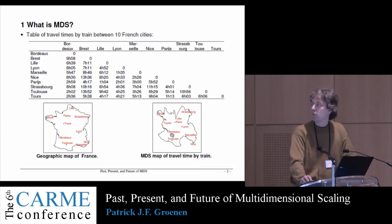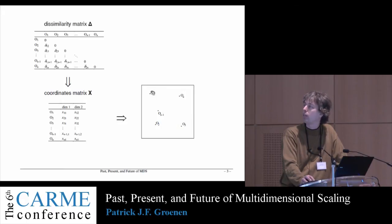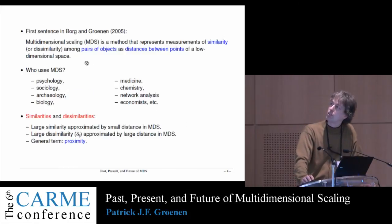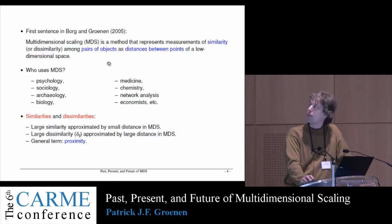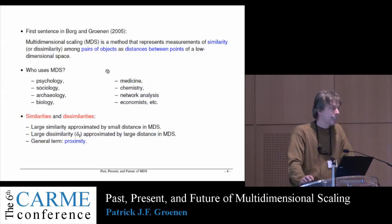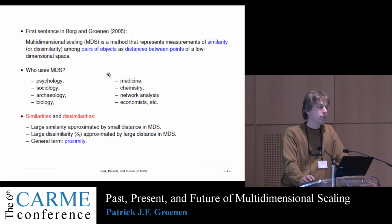In contrast, this is exactly what multidimensional scaling does: it translates a table with dissimilarities between pairs of objects — in this case, towns — such that we have corresponding distances in a plot. The first sentence of our book captures this: multidimensional scaling is a method that represents a measurement of similarity or dissimilarity among pairs of objects as distances between points of a low-dimensional space. It originates in psychology but has spread to a variety of different disciplines.